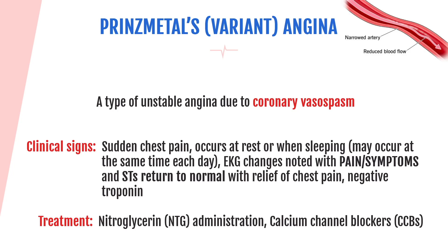With Prinzmetal's angina, chest pain occurs at rest or when sleeping and may be cyclic — occurring at the same time each day. A key giveaway is that ST elevation is present with pain and symptoms, but when symptoms resolve, the ST segment returns to normal. Additionally, troponins will be negative. Treatment includes nitroglycerin — just as in a typical MI — plus calcium channel blockers, because they help relax smooth muscle and keep the arteries open when vasospasm occurs.